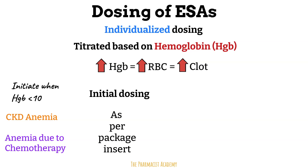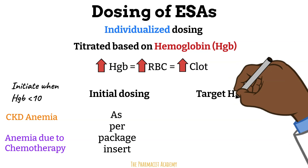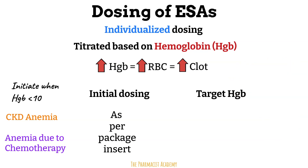Once a patient has been started on an initial dose of an ESA, the actual work begins — we have to titrate the dose to meet the recommended target hemoglobin. Researchers have established standard target hemoglobins for the two indications. When we target these numbers, it helps manage the anemia, reduces the patient's need for blood transfusions, and reduces the risk of clots. For patients with anemia due to CKD, it is recommended to target a hemoglobin of less than 11. For anemia due to chemotherapy, most studies recommend targeting a hemoglobin of less than 12.